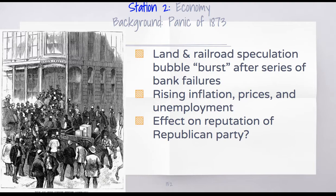Unemployment was a major symptom of this panic and depression. It peaked at about 8.5 percent — not nearly as much as the Great Depression, but still really bad. And this had a negative reputation on the Republican Party. Grant was in office during this financial panic, and to Democratic critics, this was seen as yet another reason why his administration was corrupt and inefficient.